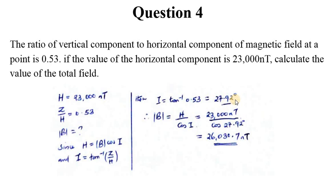When we have already obtained this value we need to get back to a relation that compares H with B and i. So for us to find B it will be H over cos i. So let's do that. H over cos i gives us 26,030.7 nanoteslas.